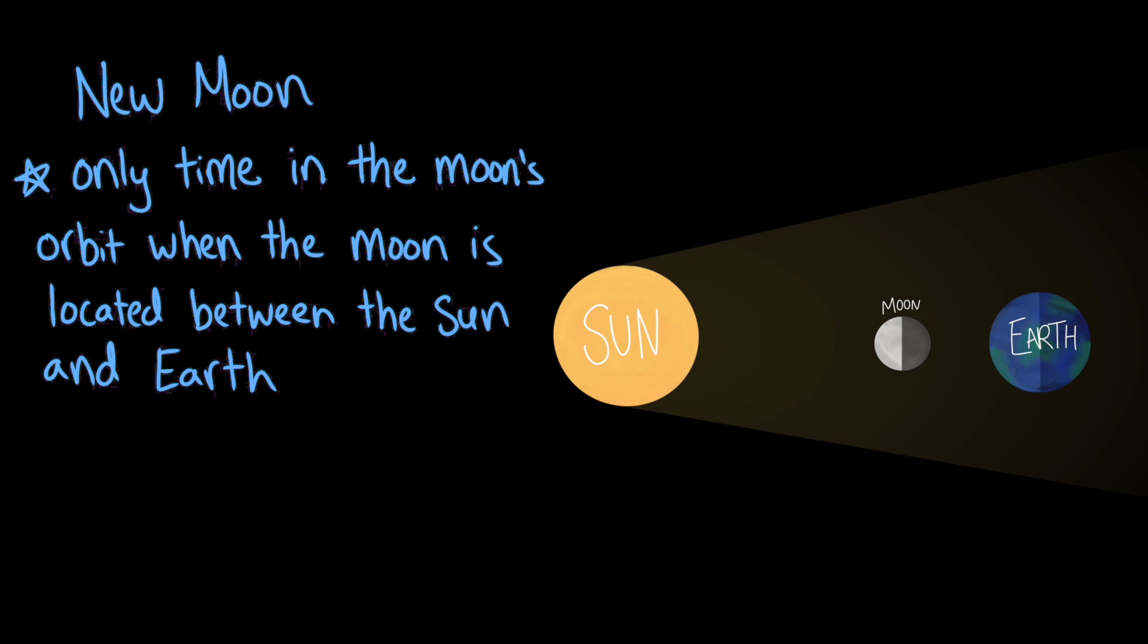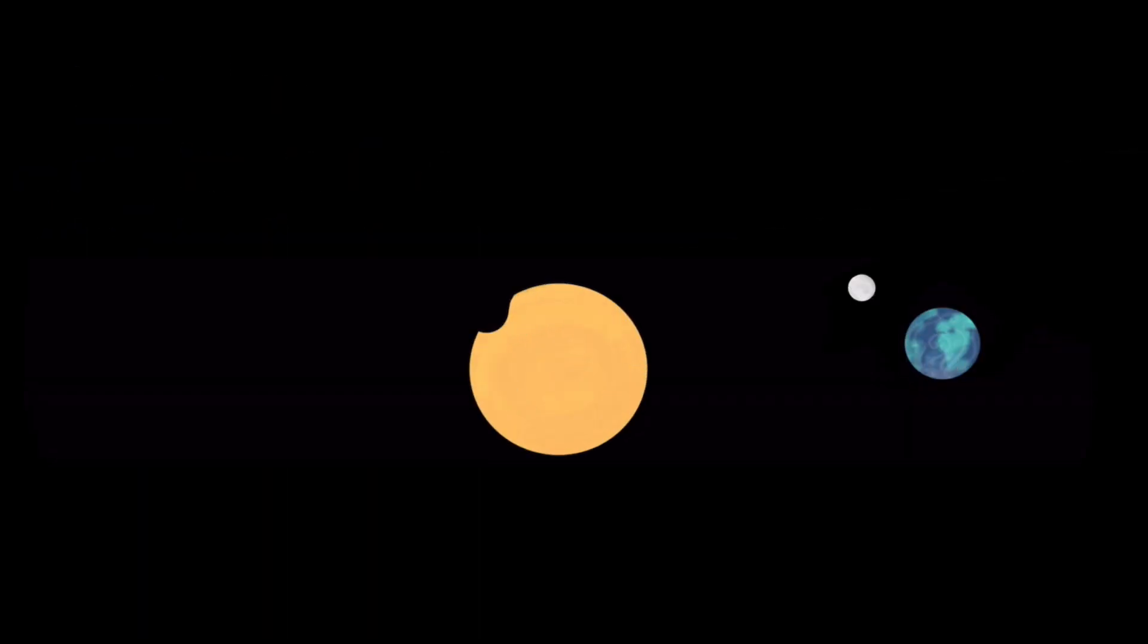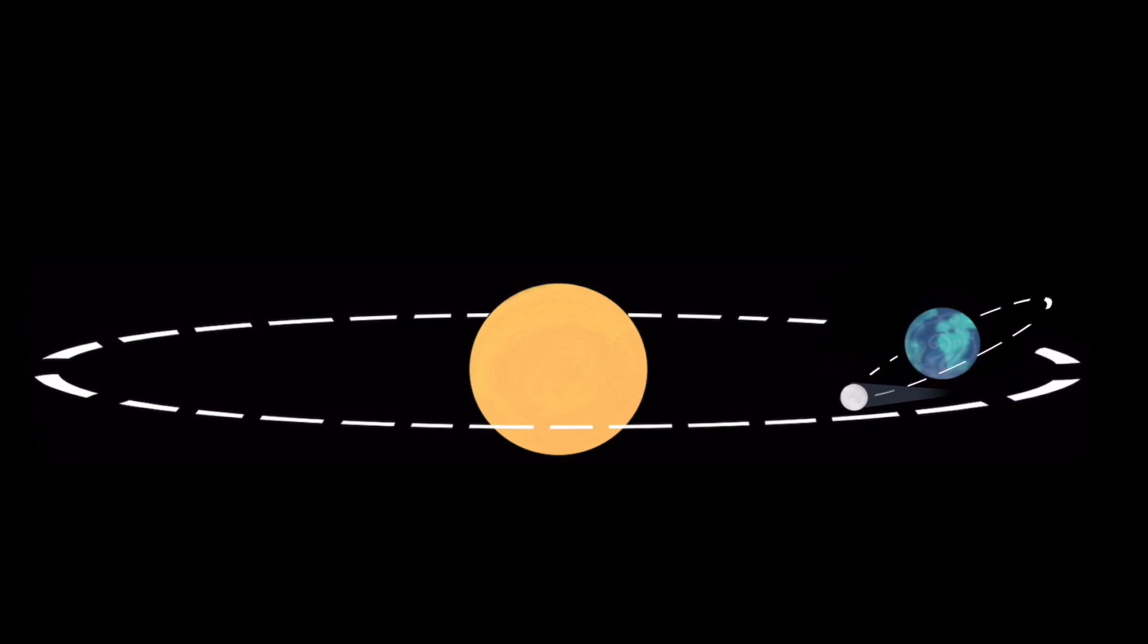Solar eclipses don't happen every new moon, though. Most of the time, the moon, Earth, and the sun are not lined up. This is because the plane of the moon's orbit around Earth is at a different angle than the plane of Earth's orbit around the sun. This means that the moon's shadow is usually too high or too low to hit Earth and cause an eclipse.